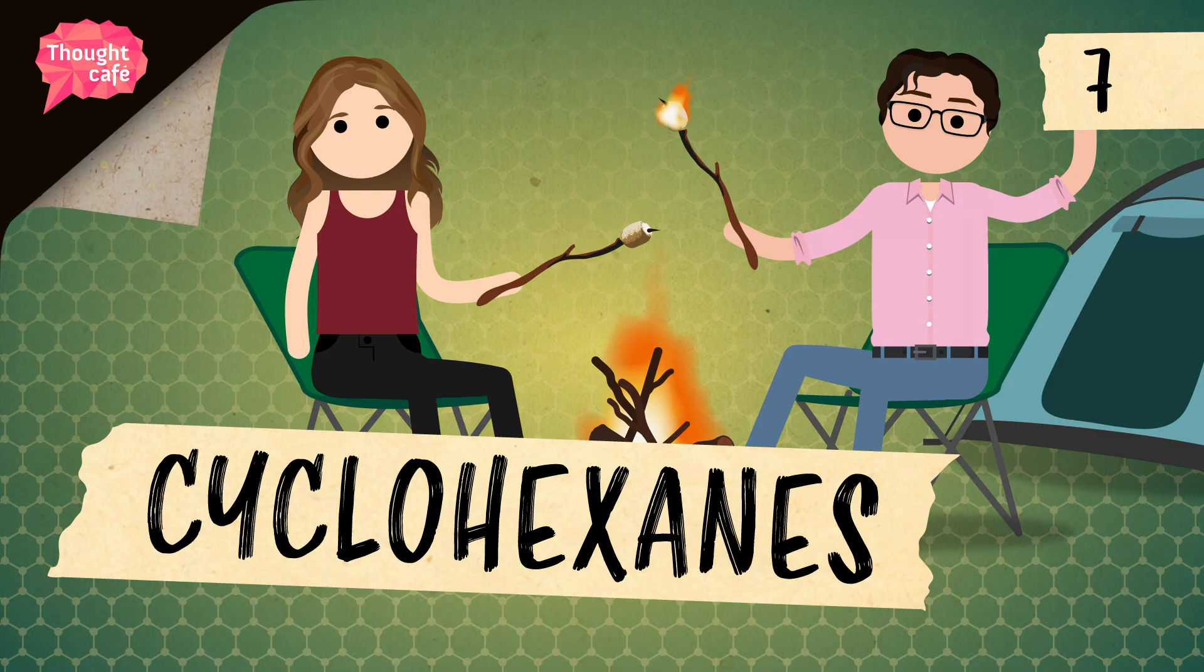Nowadays we know what causes ring strain, and we know that high strain means more energy and less stability. But organic chemists initially figured out ring strain, and lots of other things about chemical reactions, by setting compounds on fire. To see how, let's go to the Thought Bubble!